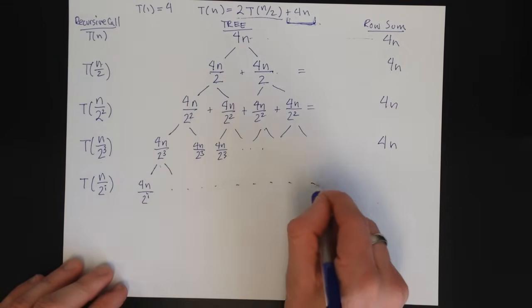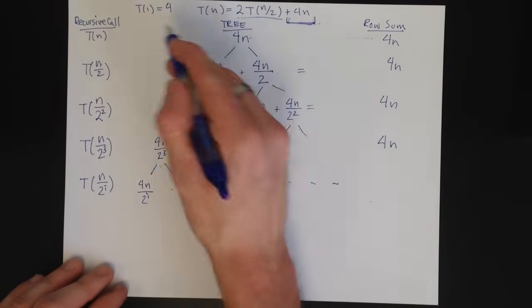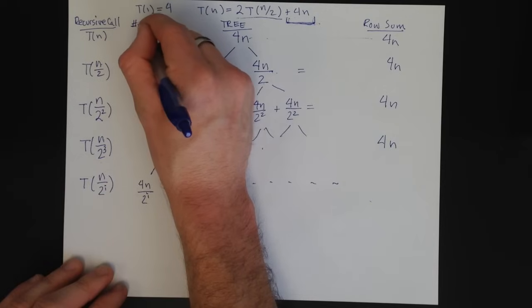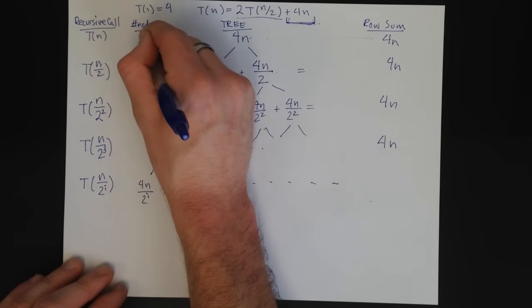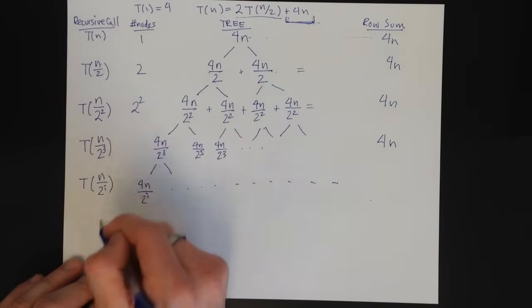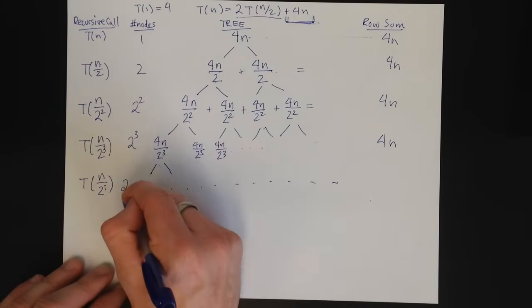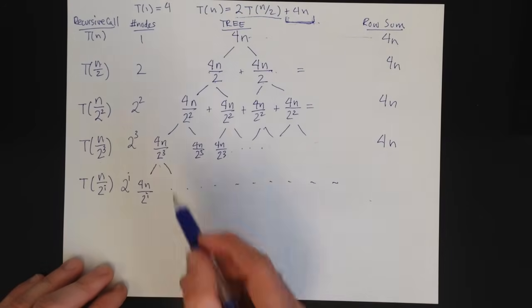How many leaves will I, how many nodes will I have at this row? Well, I had one node here. This might be helpful to also add a number of nodes column. One node here, two nodes here, 2^2 nodes here, 2^3 nodes here, across this level of the tree. So I have 2^i nodes after I've done this i times. And so the sum still sums to 4n.